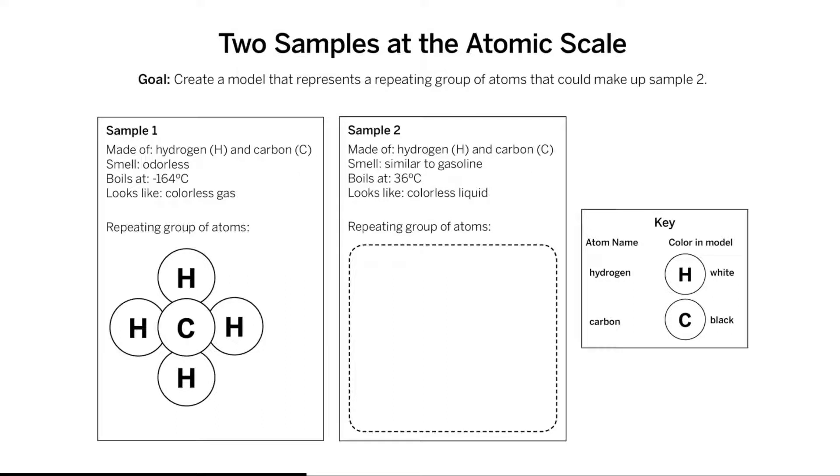Some properties are listed for both samples. The repeating group of atoms that makes up sample 1 is shown. You are expected to draw in one possible repeating group of atoms for sample 2. There are many possible answers.